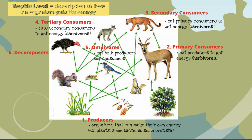Finally, we have the decomposers. Decomposers feed on dead or decaying tissues from any trophic level. So they don't care if you're a producer, primary, secondary, tertiary, or omnivore — they're going to feed on that decaying tissue. This is largely bacteria, but it also includes larger organisms like the turkey vulture.